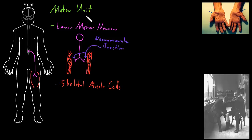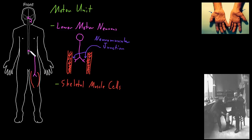The reason we call it a unit is that usually when a lower motor neuron fires an action potential, it causes all of the skeletal muscle cells in its unit to contract, so that instead of these cells doing different things at different times, they function as a unit — all activated together. The somas of the lower motor neurons are in the spinal cord or up in the brain stem, and then their axons pass out in the cranial nerves if they pass through the skull, or the spinal nerves if they pass through the spine.